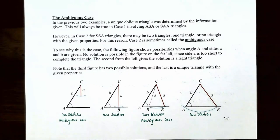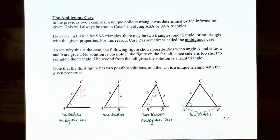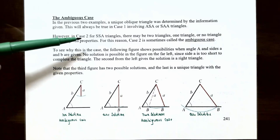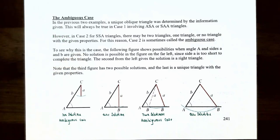Let's talk about the ambiguous case. In the examples from the previous video, a unique oblique triangle was determined by the information given. This will always be the case for ASA triangles (angle-side-angle) or SAA triangles (side-angle-angle). However, in case two — the SSA triangle (side-side-angle) — there may be two triangles, one triangle, or even no triangle that can be formed. For this reason, case two is sometimes called the ambiguous case.